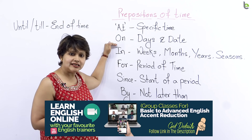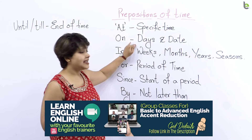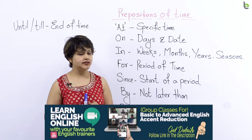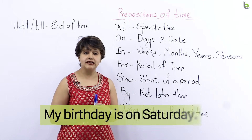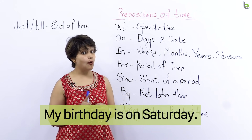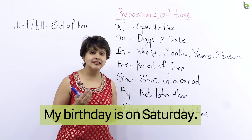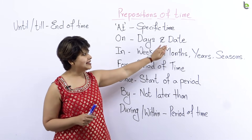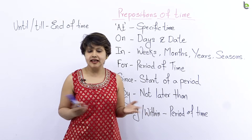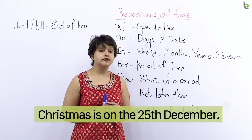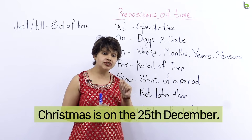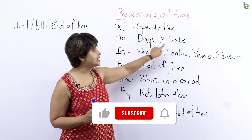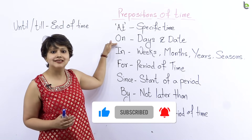ON. Doston, on ka istimal aap dinank — yaani date — ya day, yaani kisi din ko jab aapko bolna hai, toh aap on ka istimal karayin. For example: 'My birthday is on Saturday.' Mera birthday Saturday ko hai — you're all invited! Ek date ka example: 'Christmas is on the 25th of December.' Christmas 25 December ko hai. Toh aapne dekha ki kaise mene koi day aur dinank — yaani date — ko bolne ke liye on ka sahara liya.